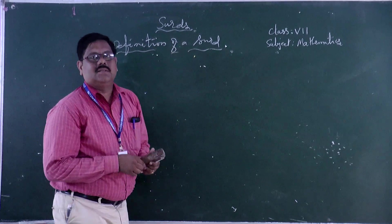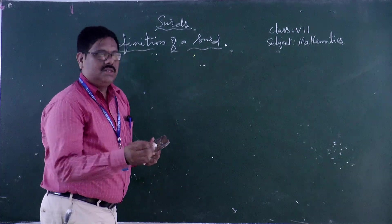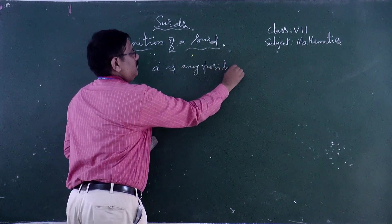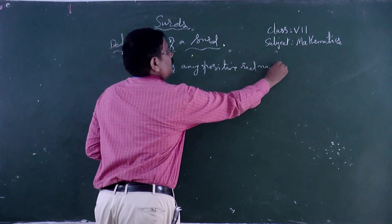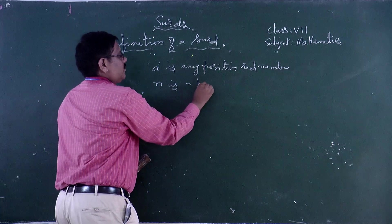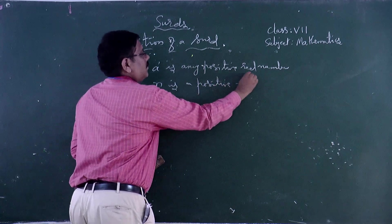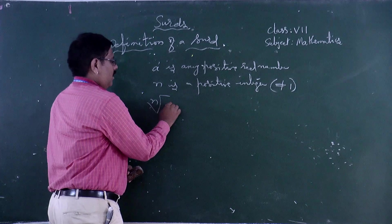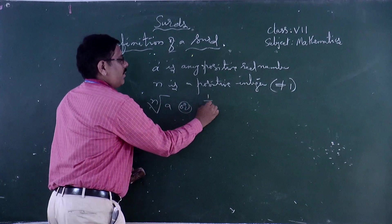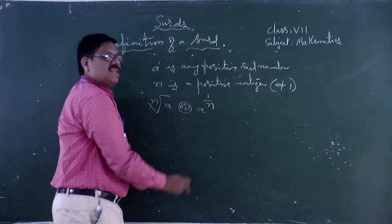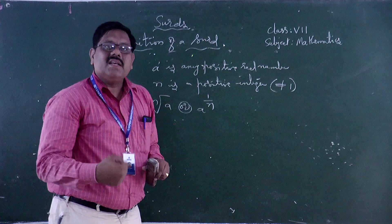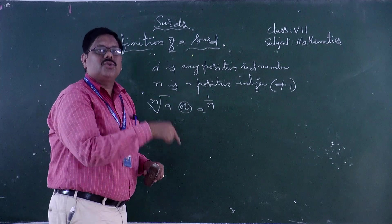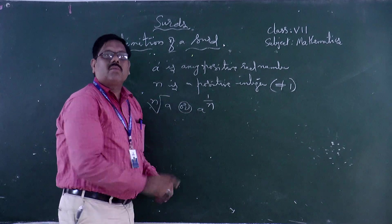Now, how do we define a surd? According to the definition of a surd, if A is any positive real number, and N is a positive integer not equal to 1, then N root A, or A to the power of 1 by N, is called a surd if the result is not a rational number.